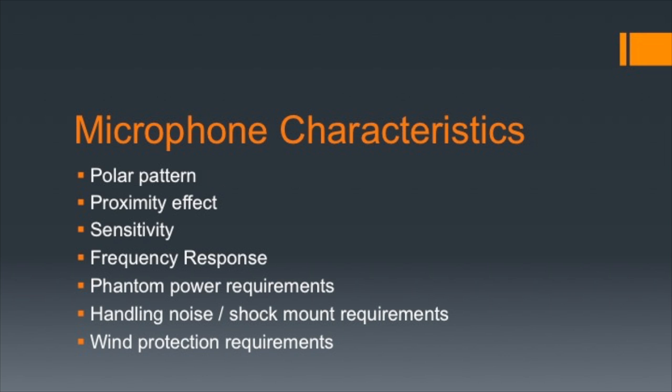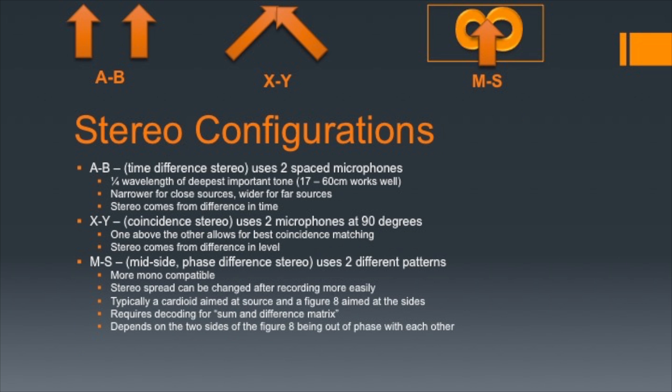For handheld, outdoor, or other noisy situations, pick a microphone with appropriate handling characteristics or with an appropriate shock mount and wind filter. A lot of audio for broadcast video is, in essence, mono broadcast as stereo because it is a single-source, single-microphone signal. We send it out on the left and right channels because most of our listeners are listening in stereo.